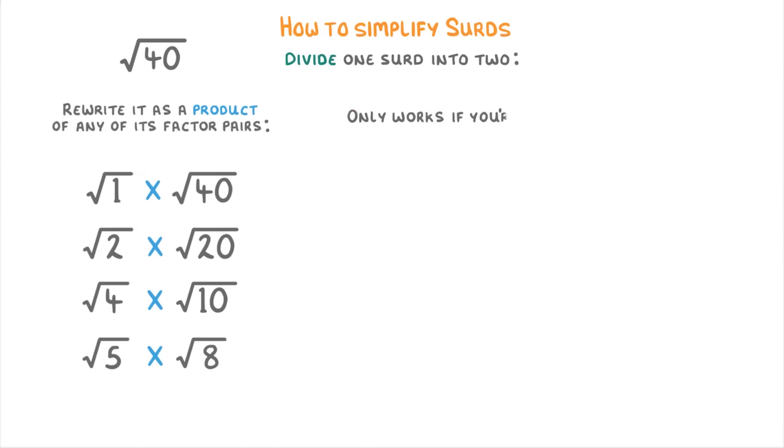One important point though is that this rule only works if you're multiplying or dividing. So while you could rewrite root 40 as root 80 divided by root 2, because 40 equals 80 divided by 2,